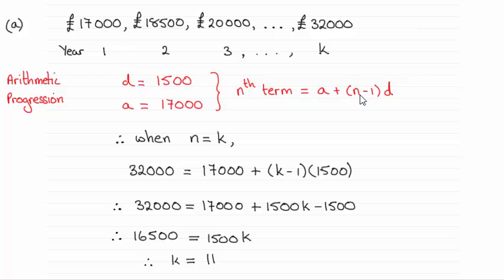So all we need to do is set N equal to K. And that means that this Kth term, the last year where she earns £32,000, is our Kth term.